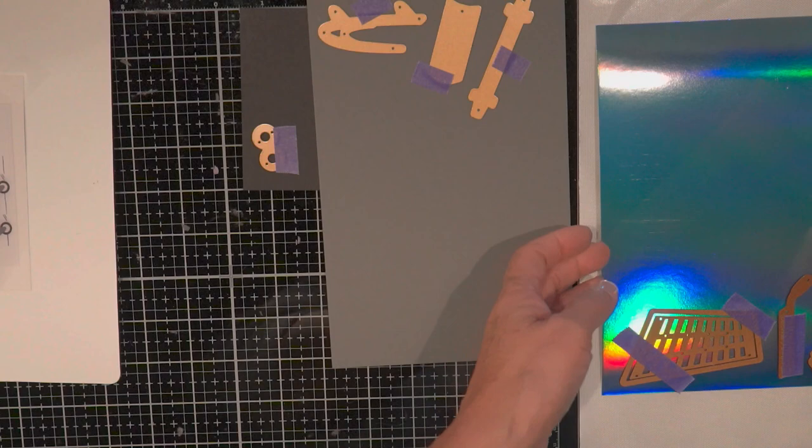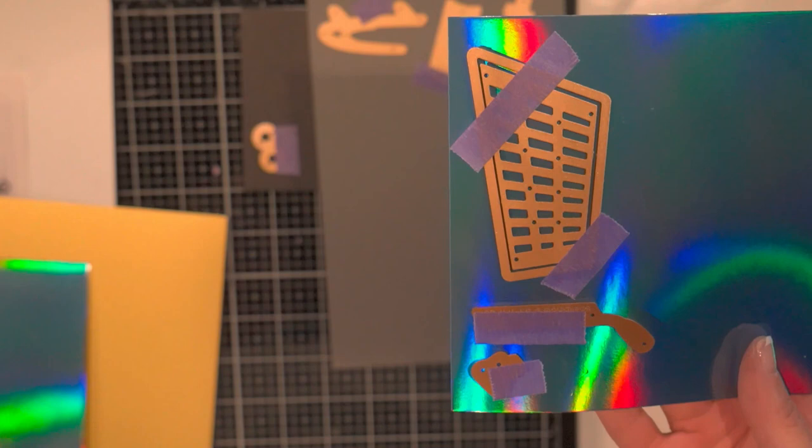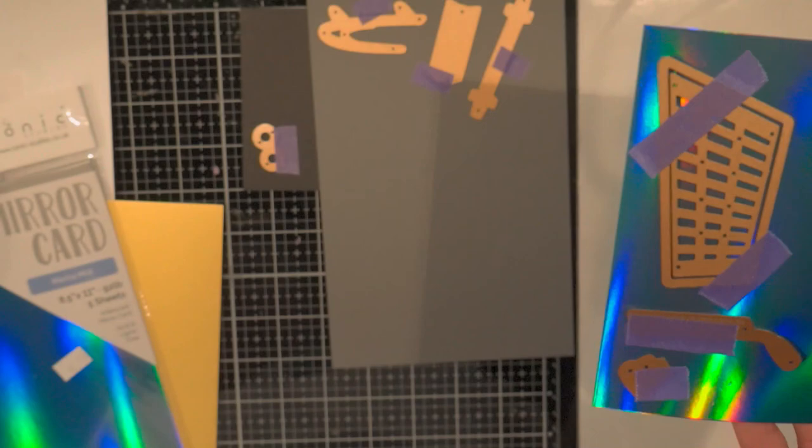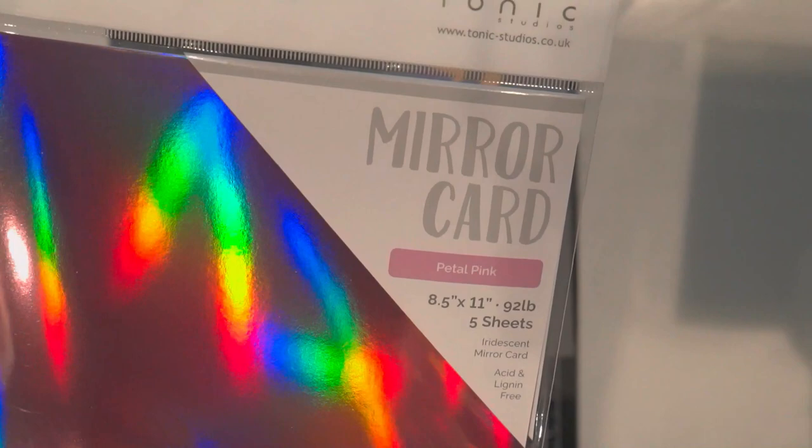I thought it was a fantastic set. So I bought this foil paper here from Tonic Studio, and it's called Meerkard. I bought the Marina Mist, and I also bought it in the Petal Pink. So I thought the boys would be blue and the girls would get pink carts.